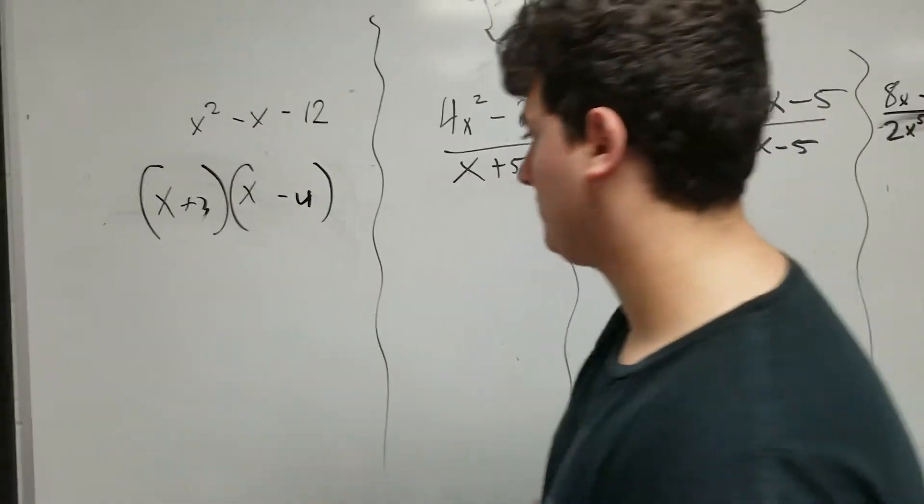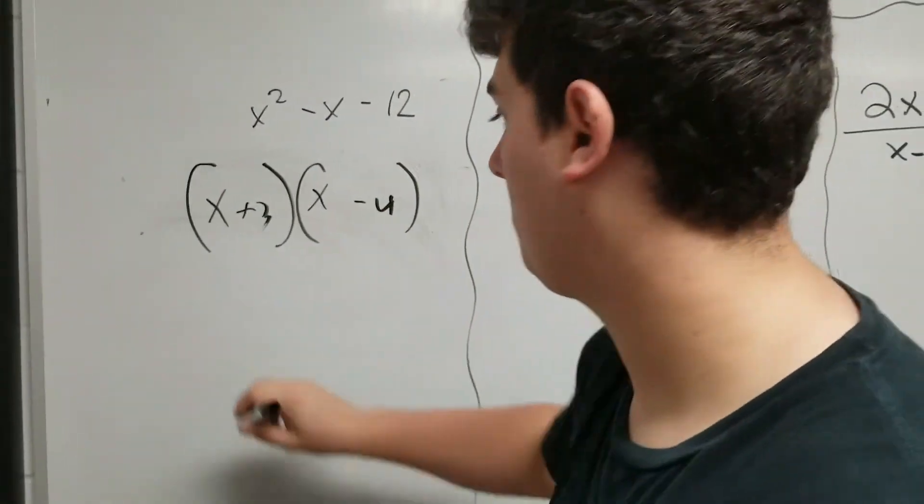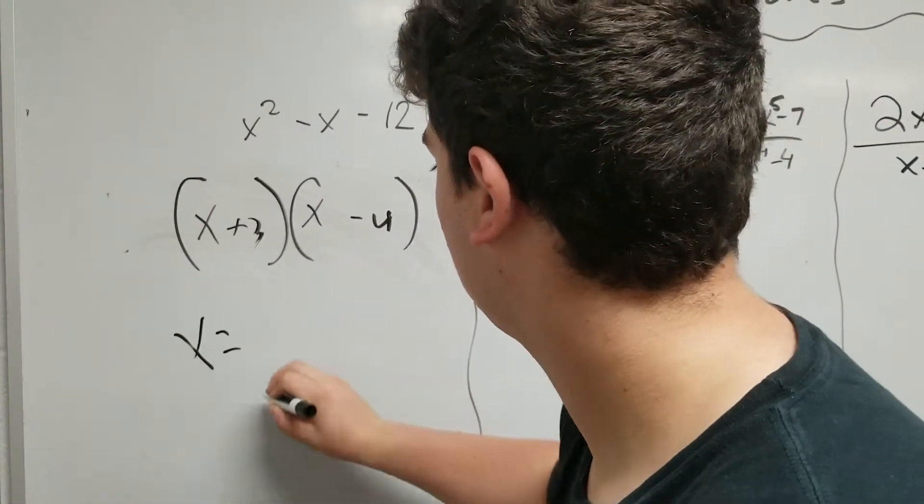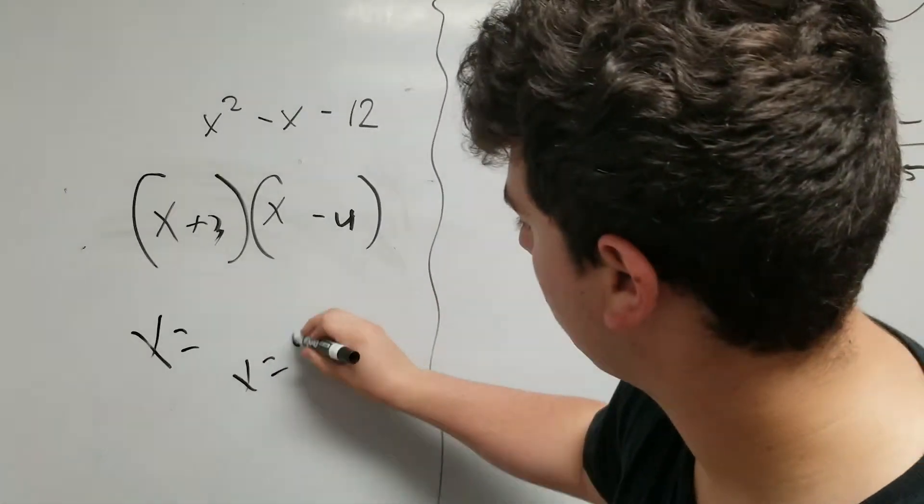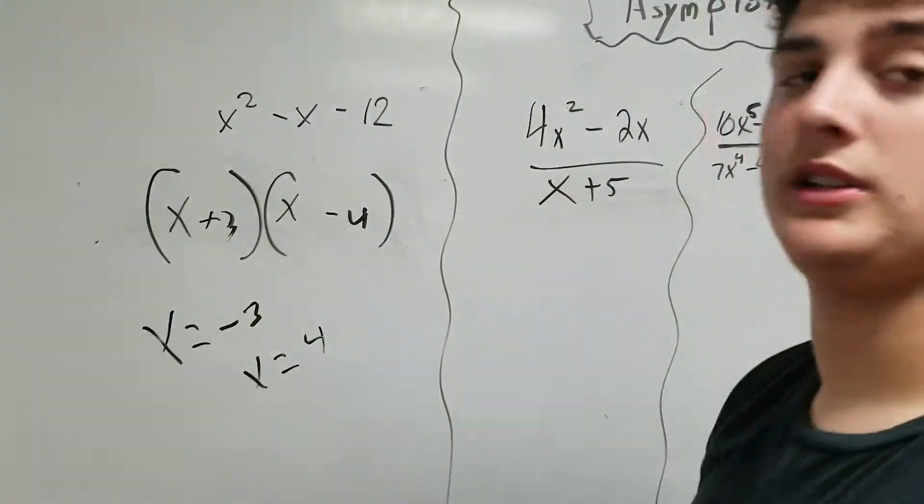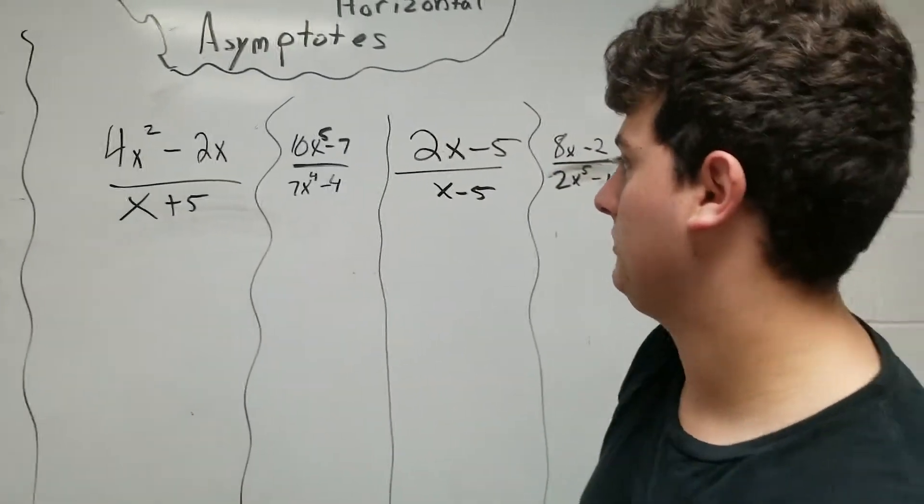To find the vertical asymptote, I'm going to equal these to 0. This one's going to be positive 4 and this one's going to be negative 3. So that's just one way to do it. I'm going to show the second way.